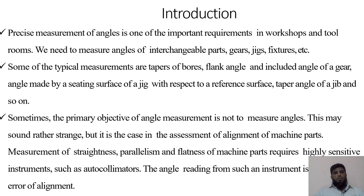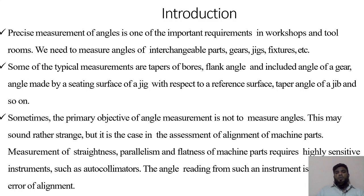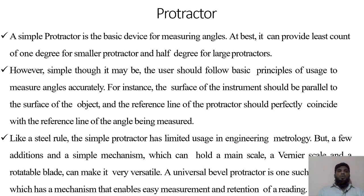Precise measurement of angles is one of the most important techniques in most workshops and tool rooms. We use it to measure the angles of interchangeable parts such as fixtures, bore flak angles, and gear angles. Sometimes the prime objective is not to measure the angle but to measure the alignment of machine parts. Straightness, flatness, and parallelism require high sensitive instrumentation such as the autocollimator. Angle readings from such measurements are also known as error in alignment.